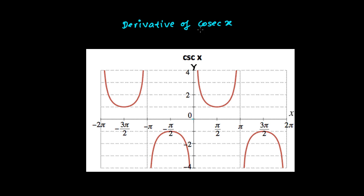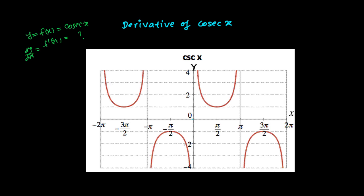In this video I'm going to derive the derivative of cosecant of x. Here I have the graph of cosecant of x. If my function f(x) is cosecant of x, then what will be the derivative of this f(x)? Or in the form of y, dy/dx will be what?